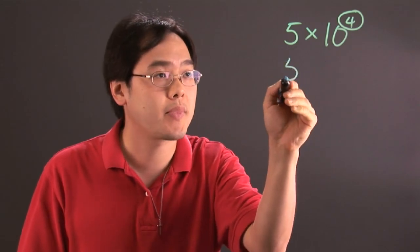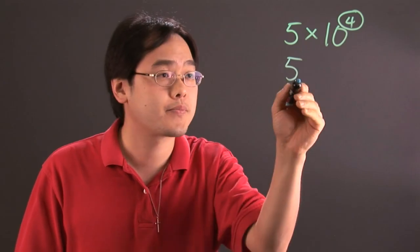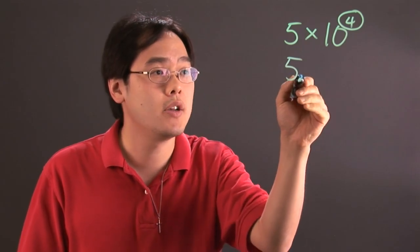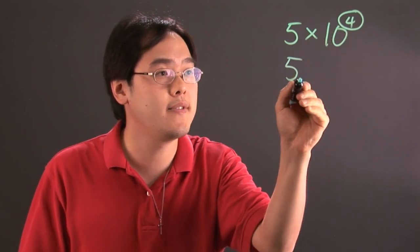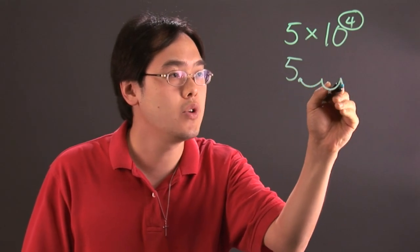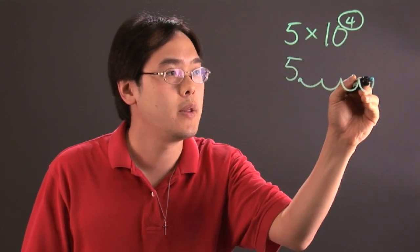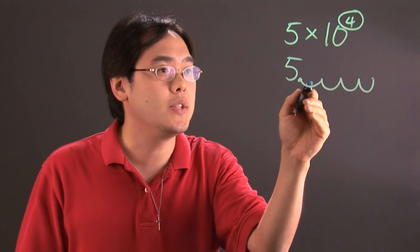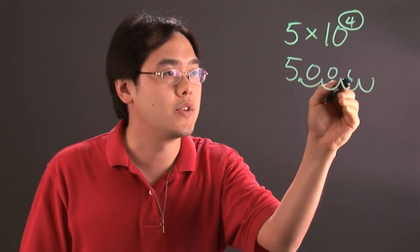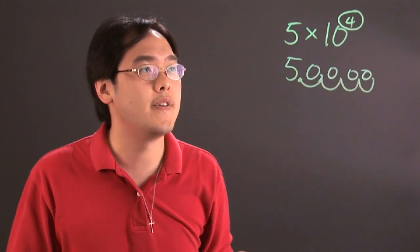So that means, since you know it's 5, the decimal is here, you're going to shift the decimal to the right four places. 1, 2, 3, 4, so that means the final answer is going to be 50,000,